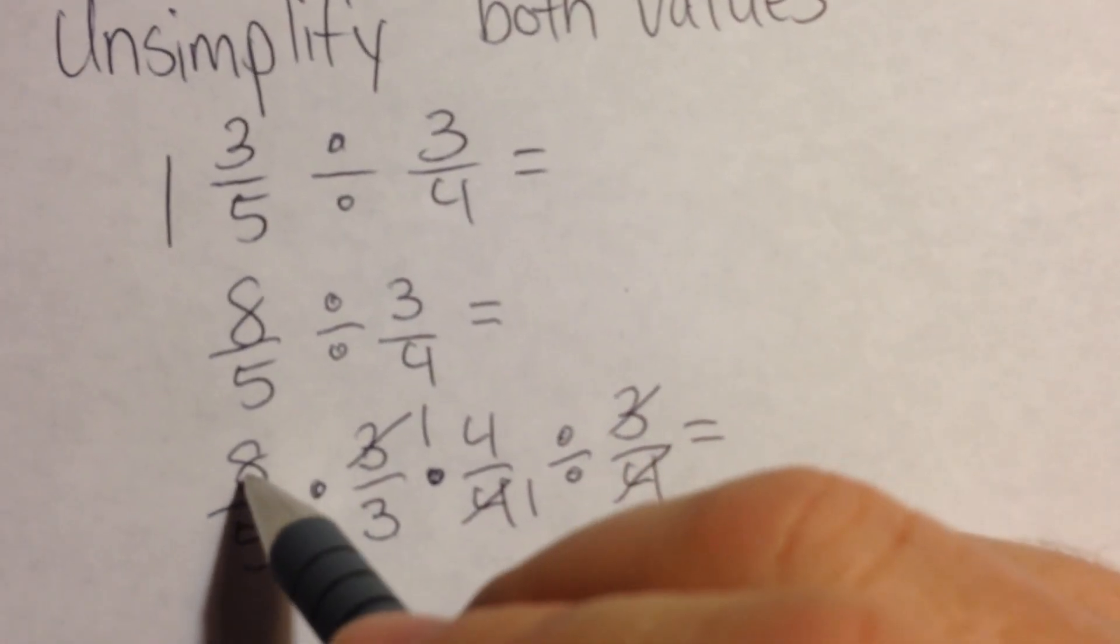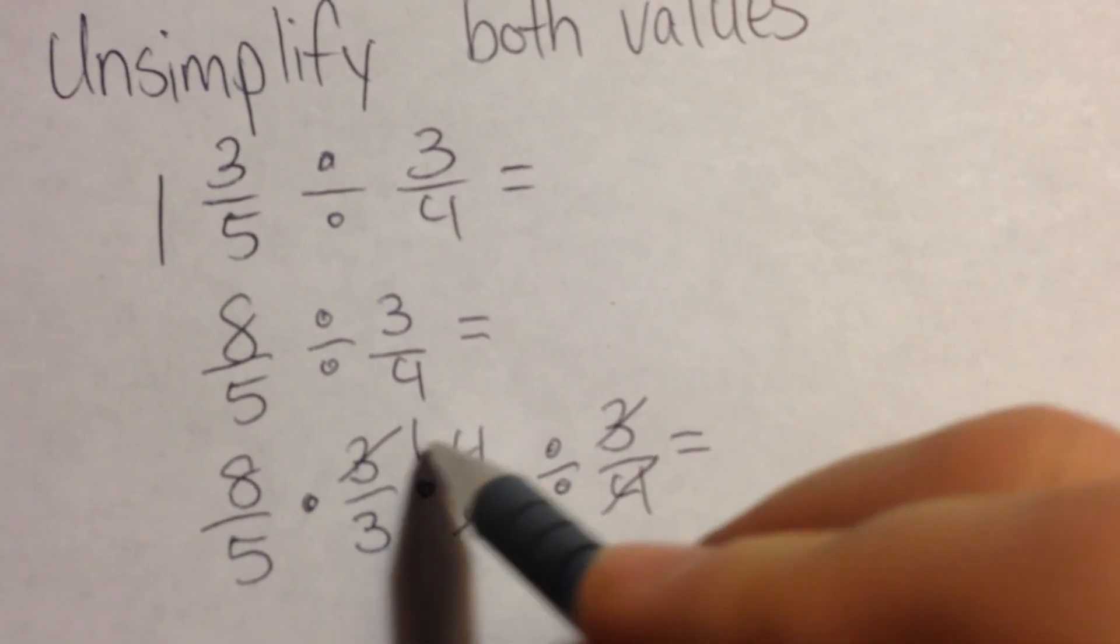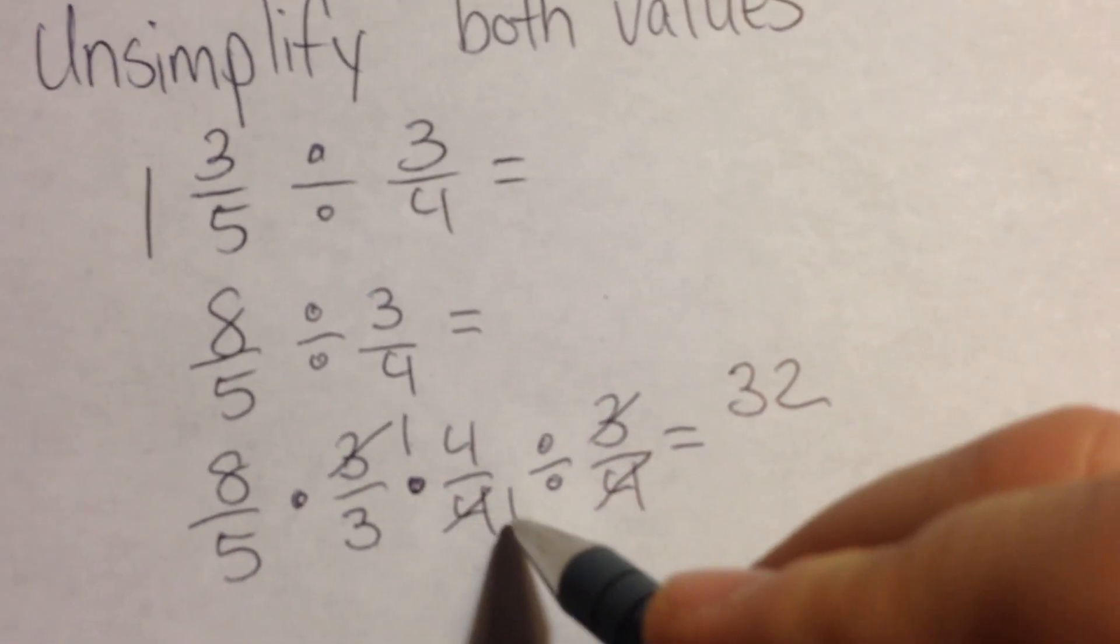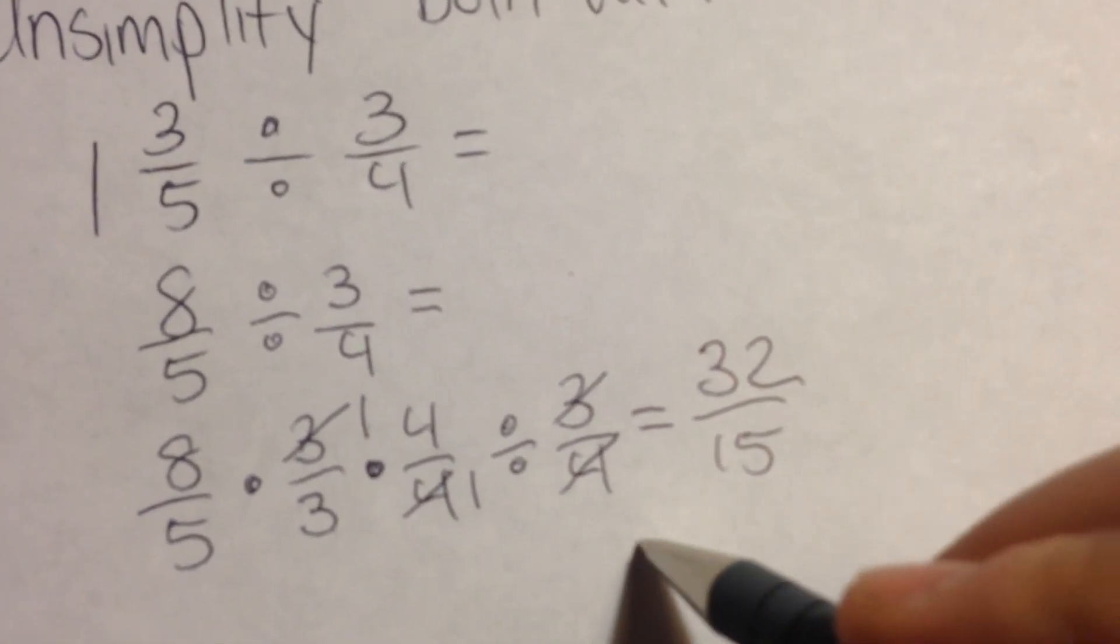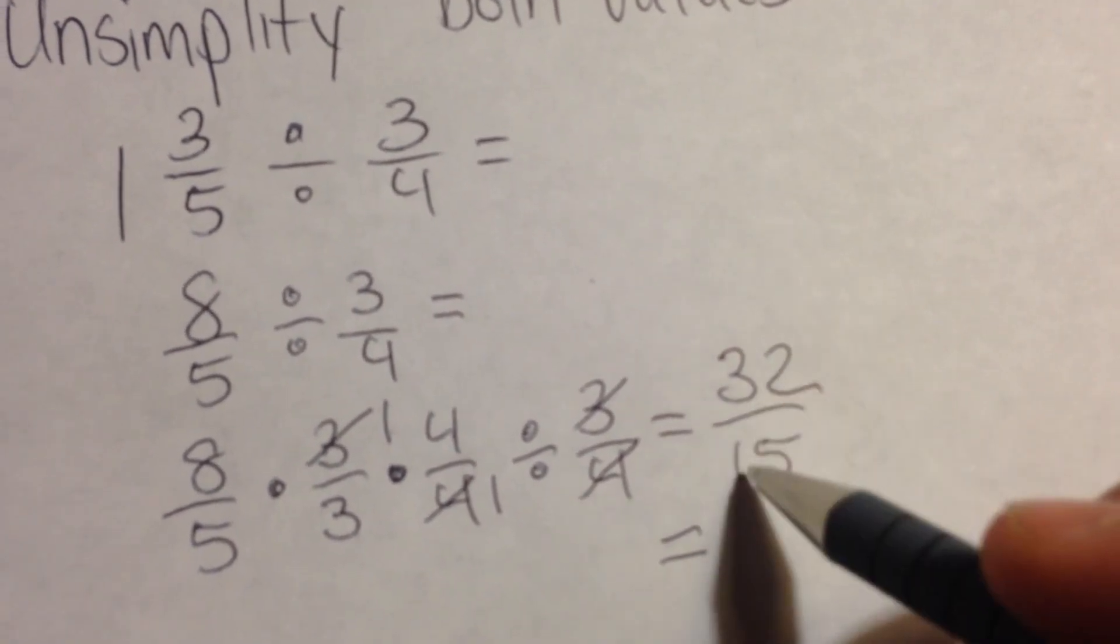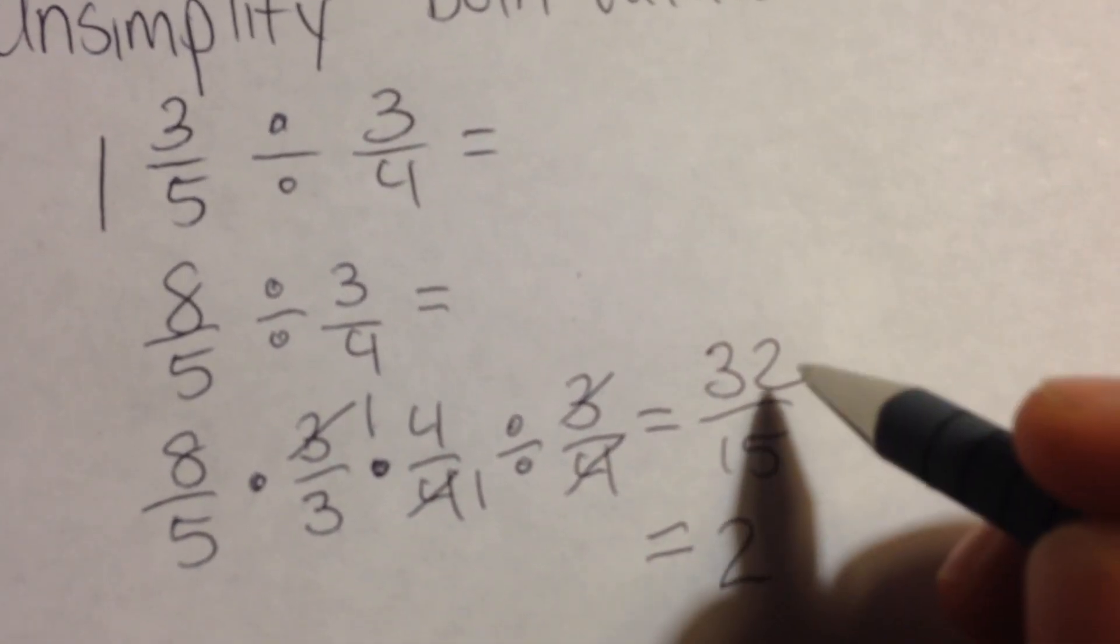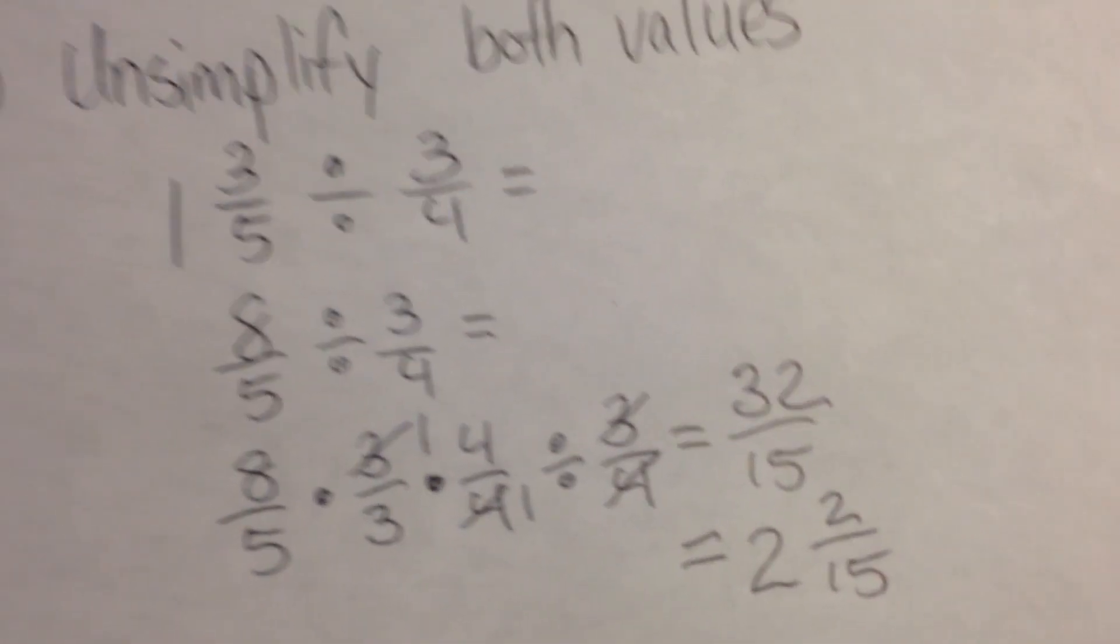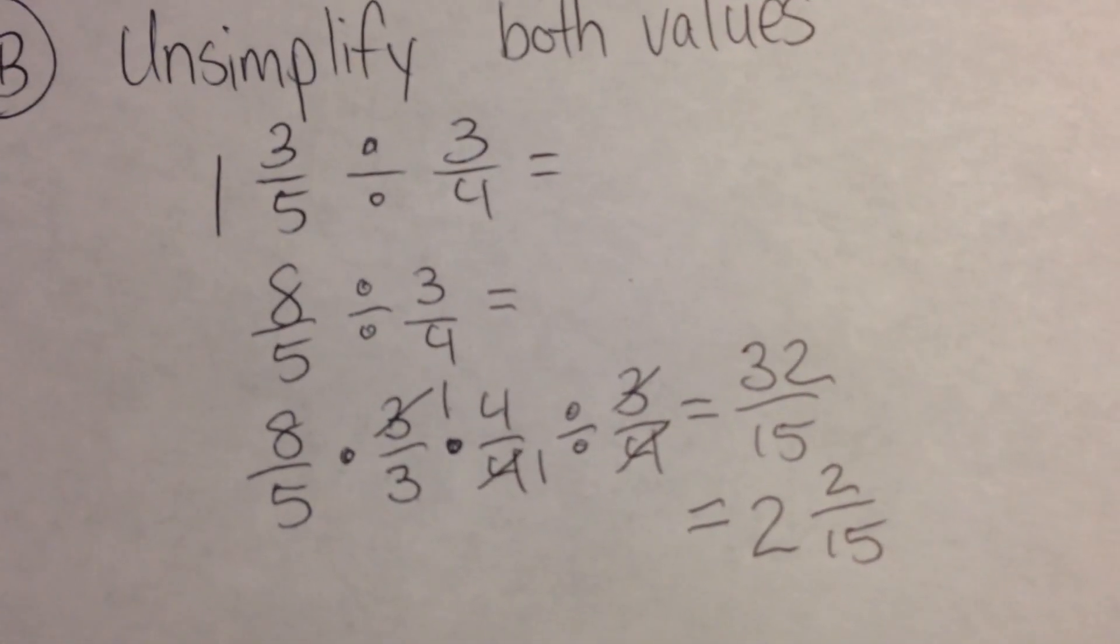So now we can simply multiply what's left in our numerators and denominators. 8 times 1 is 8, times 4 would give us 32. 5 times 3 times 1 would give us 15. So we have 32 fifteenths that we would need to change from an improper fraction to a mixed number by dividing. 32 divided by 15. 15 will go into 32 two times, and we'll actually have a remainder of 2 out of 15. And there you have unsimplifying both values and solving for division to get an answer.